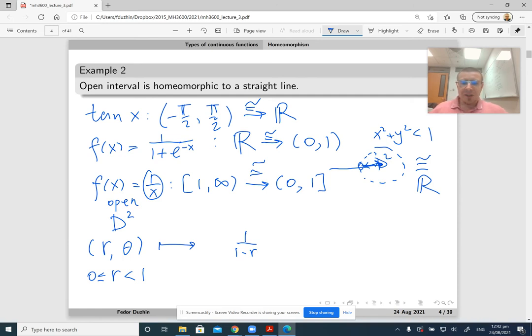If I just take 1 over 1 minus r, then the range is going to be from 1 to infinity rather than from 0 to infinity. So what I should do is subtract 1. And now, this is an arbitrary point on the real line. So an open disk is homeomorphic to the plane.